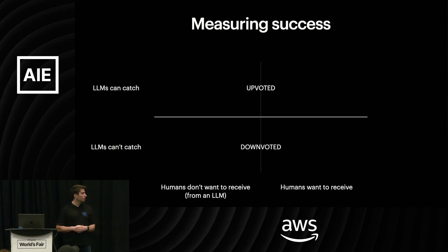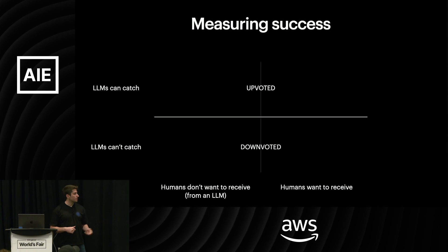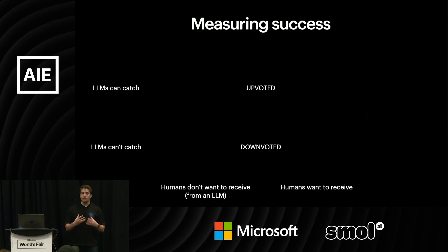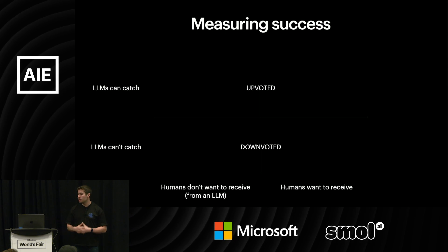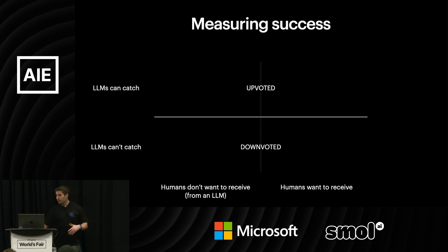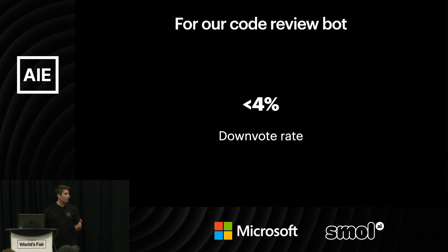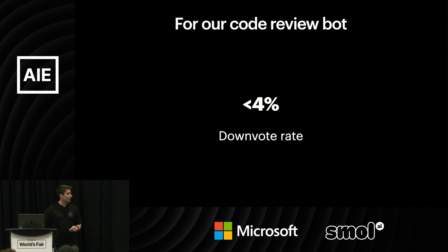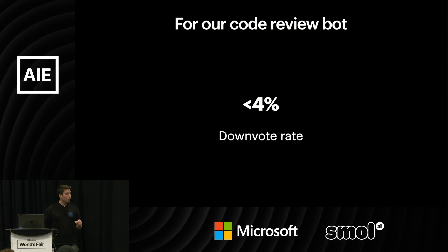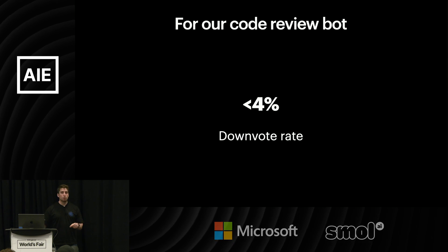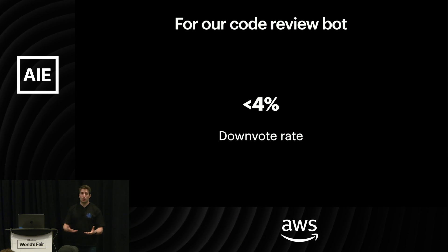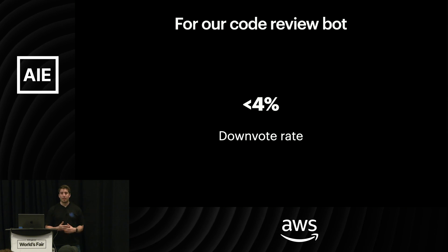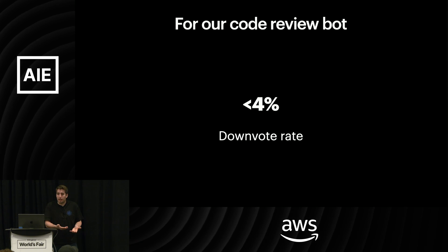But the second axis — humans want to receive versus don't want to receive — was a lot harder, and something we weren't really sure how to get at. We implemented upvote/downvote and we see less than a 4% downvote rate these days, which felt pretty good. The second question we started to ask was: what's the point of a comment? Why do you leave a comment in code review? You leave a comment ultimately so that someone actually updates the code to reflect it.